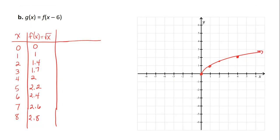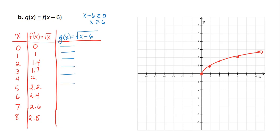What if we have g(x) = f(x-6)? In this case g(x) = √(x-6). This function is defined only when x-6 ≥ 0, or when x ≥ 6. So we can't even plug in 0, 1, 2, 3, 4, or 5 into that function.